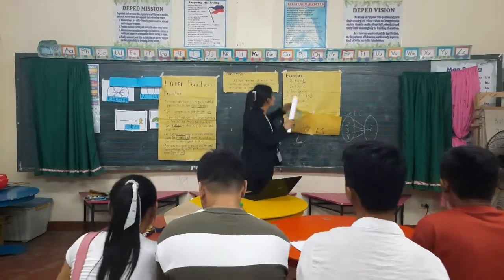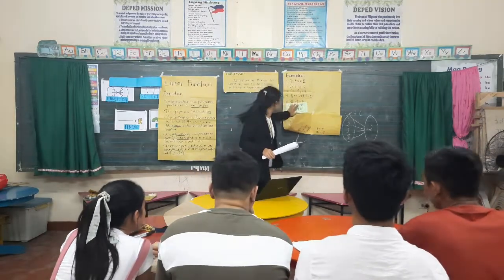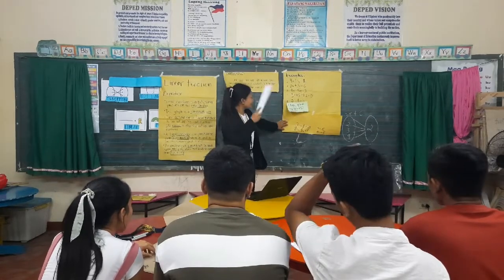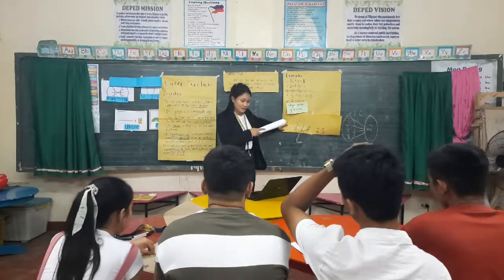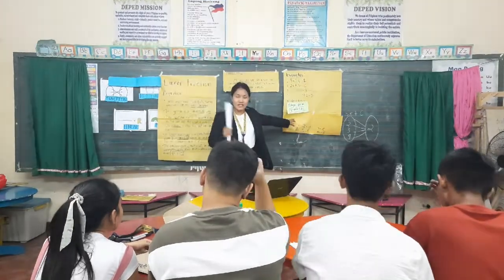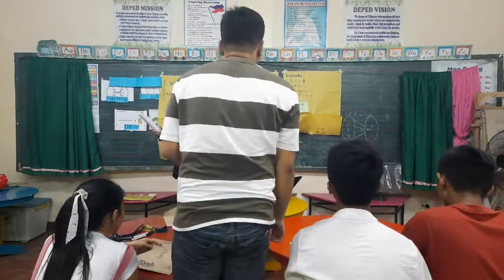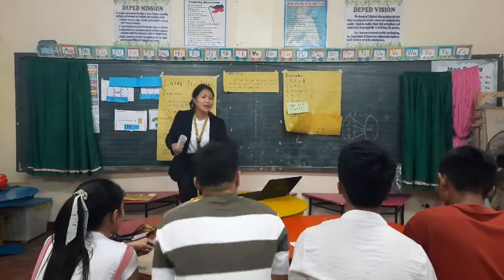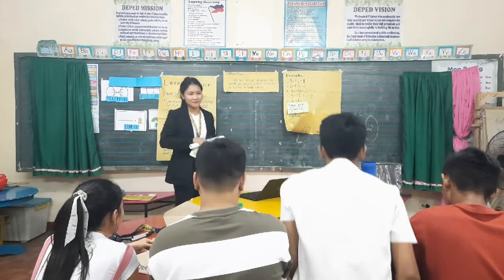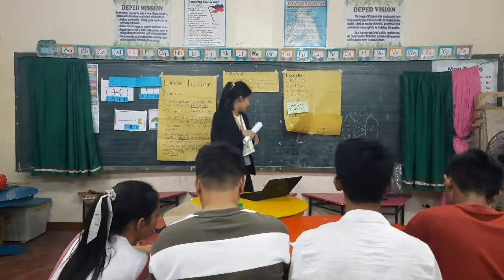This is the slope-intercept form. Can we all read this one? Slope-intercept form: y = mx + b. So what do you think is the slope in our equation? Mr. Kababa: The variable m. Okay, very good. How about our y-intercept? B. Please stand. B. Okay, very good — it's B.